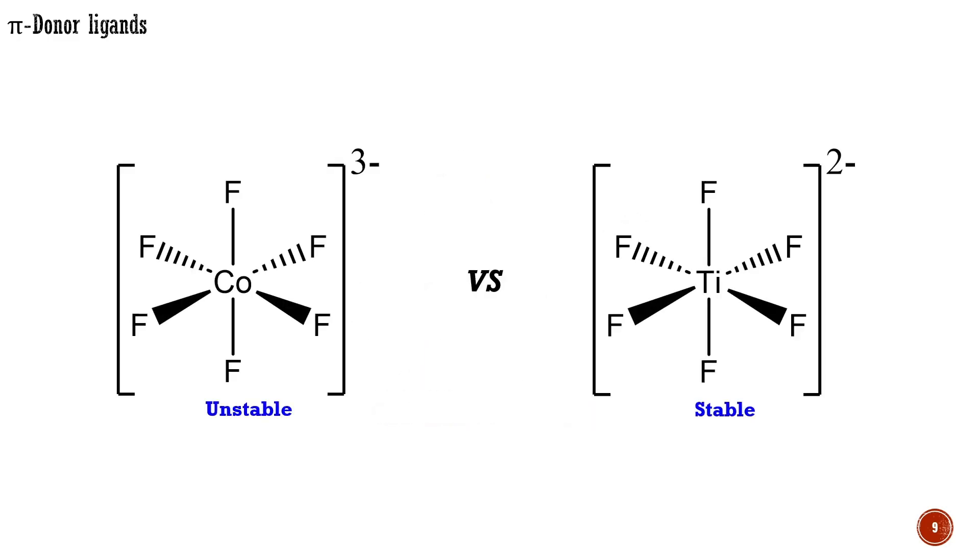In sharp contrast, if the metal has empty d-orbitals, as in the d⁰ ion titanium-4, π-donation from the π-donor ligand to the metal empty d-orbitals now leads to stronger metal-ligand bonding. d⁰ metals therefore form particularly strong bonds with π-donor ligands.